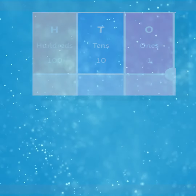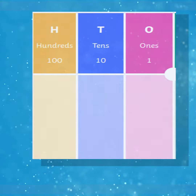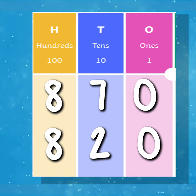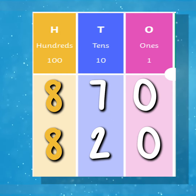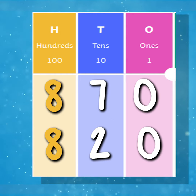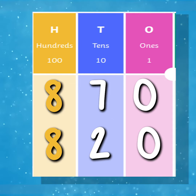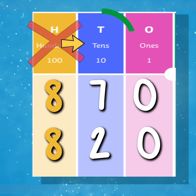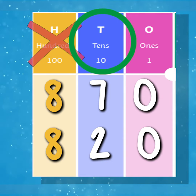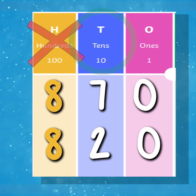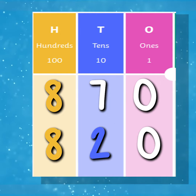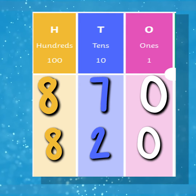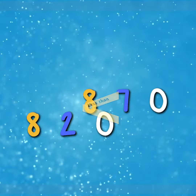Let's have a look at another example. Here are the numbers 870 and 820. As we can see on our place value chart, both of our numbers have their highest value digit in the hundreds column. However, we can't compare these numbers using the hundreds column, as both of their digits in the hundreds are the same. Therefore, we need to look to the column which has the next highest value, which is the column to the right — the tens column. We can see that the two tens in 820 is less than the seven tens in 870, so therefore 820 is less than 870. We can use the less than sign to show this.